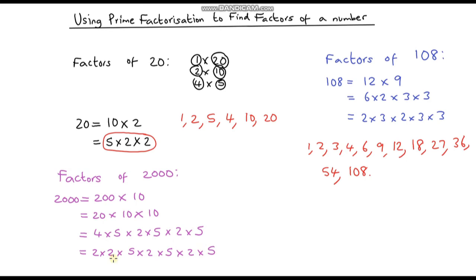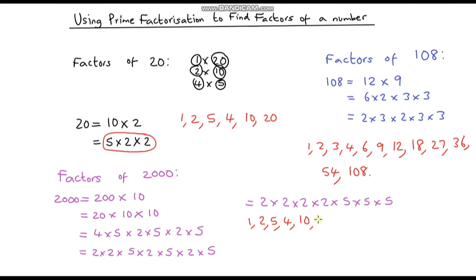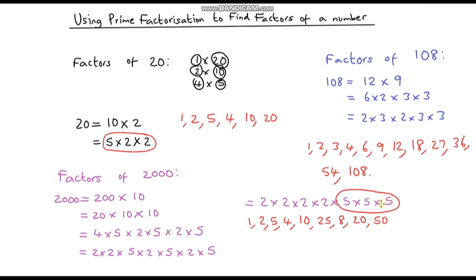To make it easier to track, I'll group the prime factors: we have four 2s — 2 times 2 times 2 times 2 — and three 5s — 5 times 5 times 5. Starting our factors: 1, 2, and 5. Two-number combinations: 2 times 2 is 4, 2 times 5 is 10, and 5 times 5 is 25. Three-number combinations: 2 times 2 times 2 is 8, 2 times 2 times 5 is 20, 2 times 5 times 5 is 50, and 5 times 5 times 5 is 125.